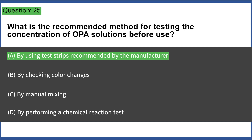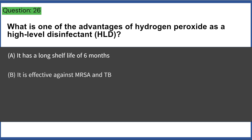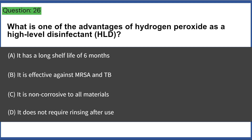What is one of the advantages of hydrogen peroxide as a high-level disinfectant (HLD)? a) it has a long shelf life of six months, b) it is effective against MRSA and TB, c) it is non-corrosive to all materials, d) it does not require rinsing after use. Answer: B, it is effective against MRSA and TB.